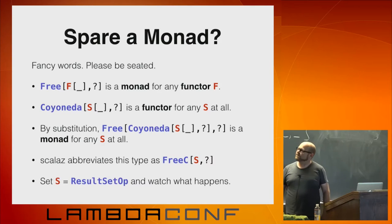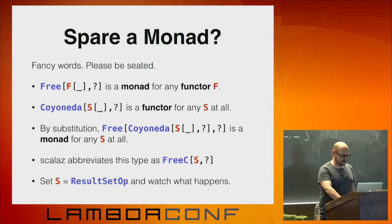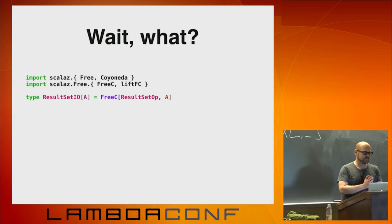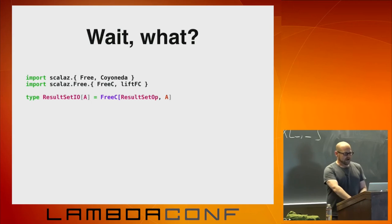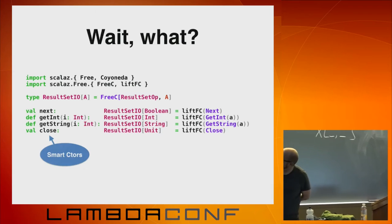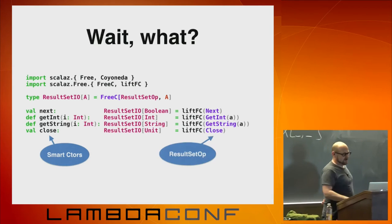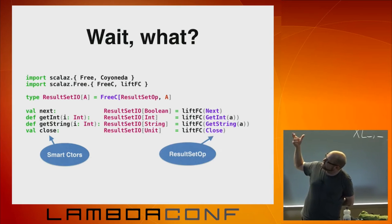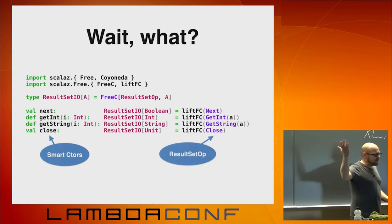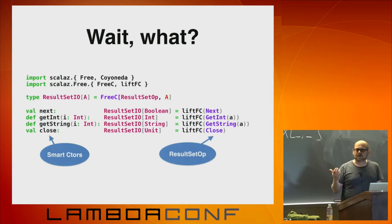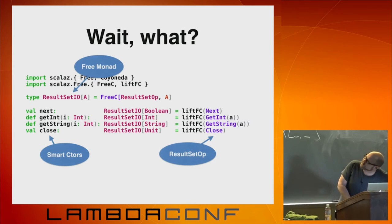If we set S equal to ResultSetOp, here's what it looks like. We're declaring a new type called ResultSetIO that is just the free monad over the free functor of ResultSetOp. Then we define a smart constructor for all of these methods on ResultSet, and we lift the result set op constructor into this new type using liftFC. So what we have now is a way to construct values of type ResultSetIO, which is a monad.